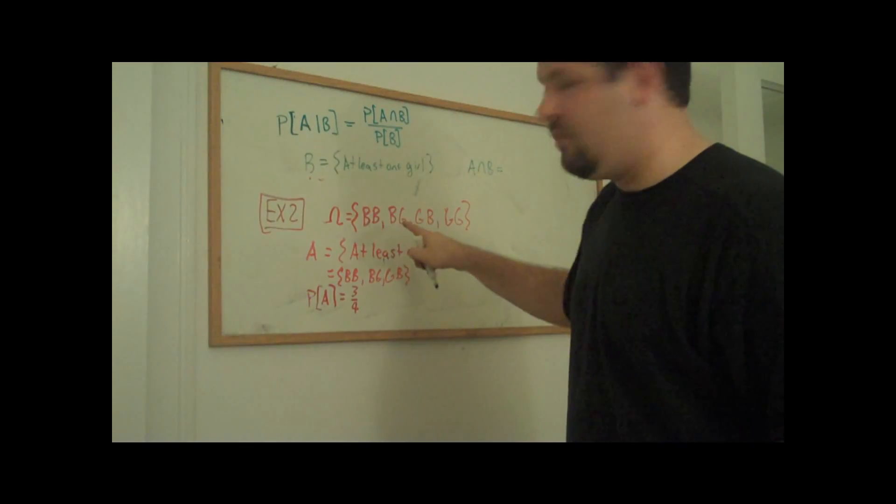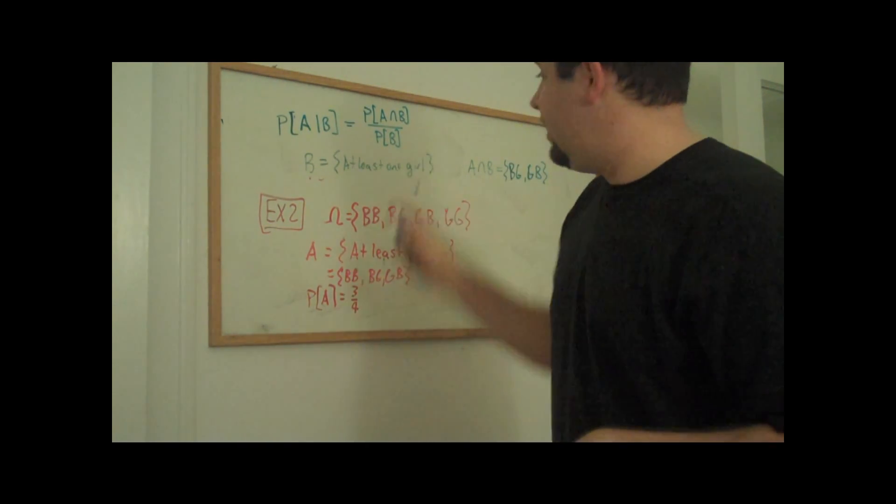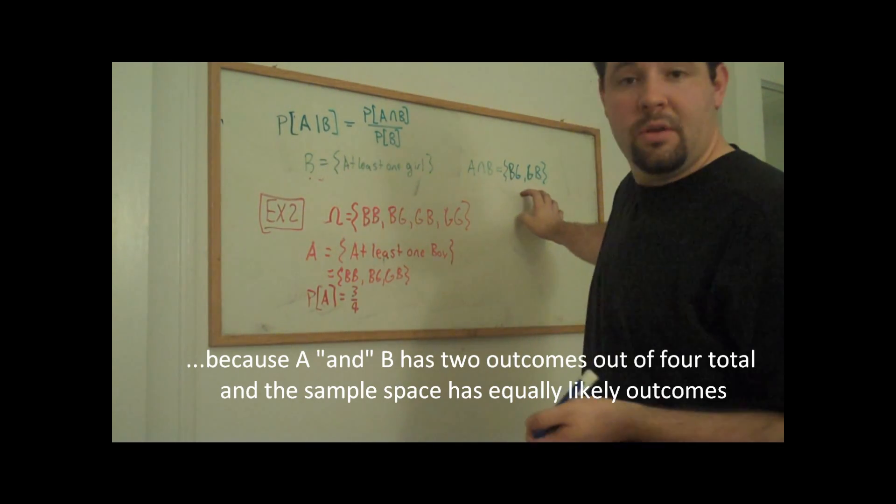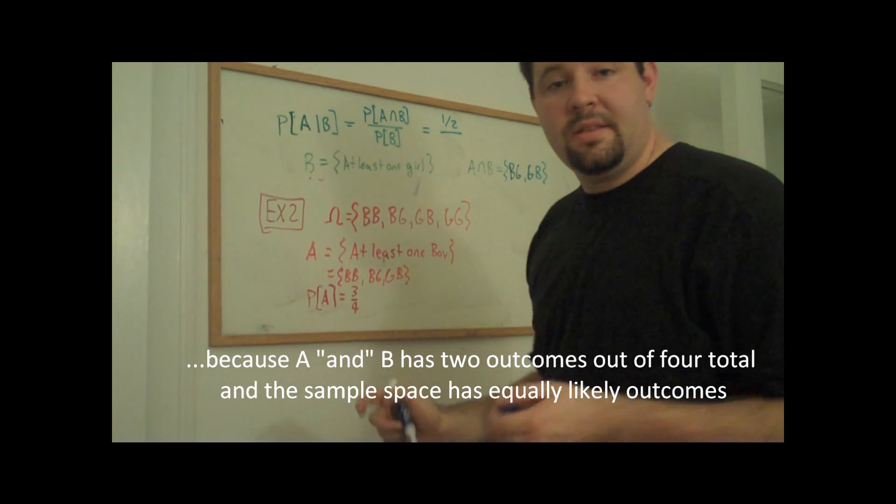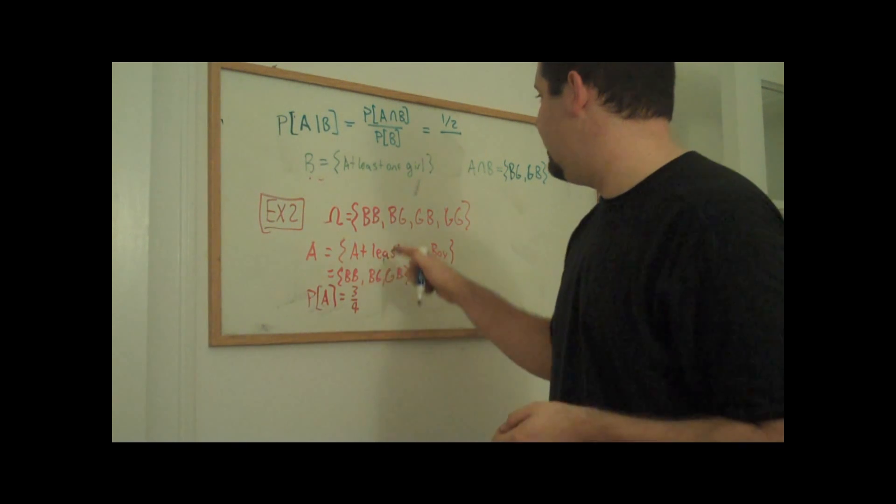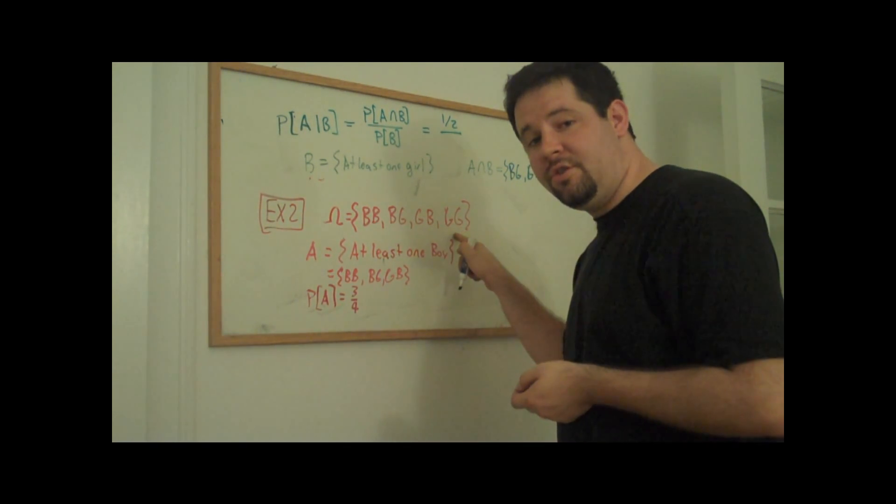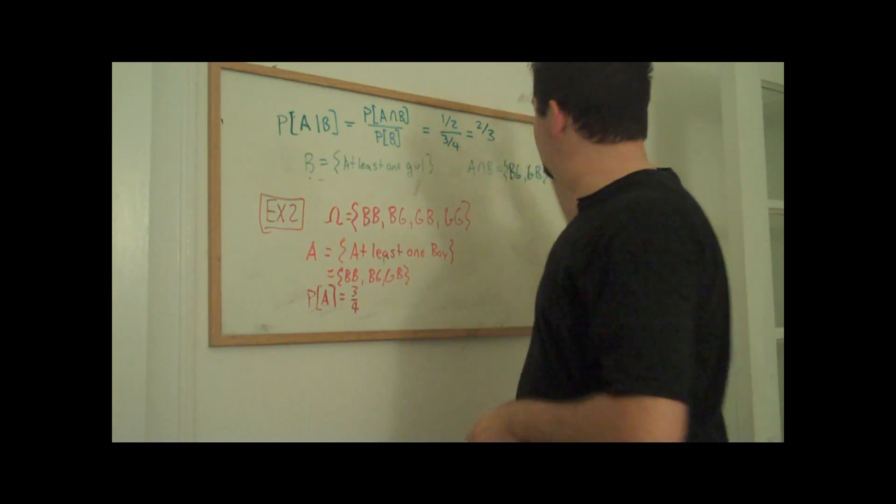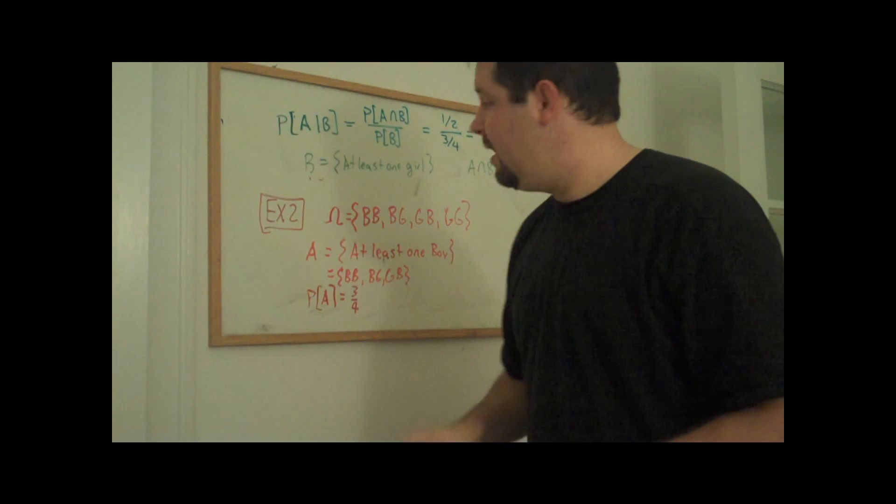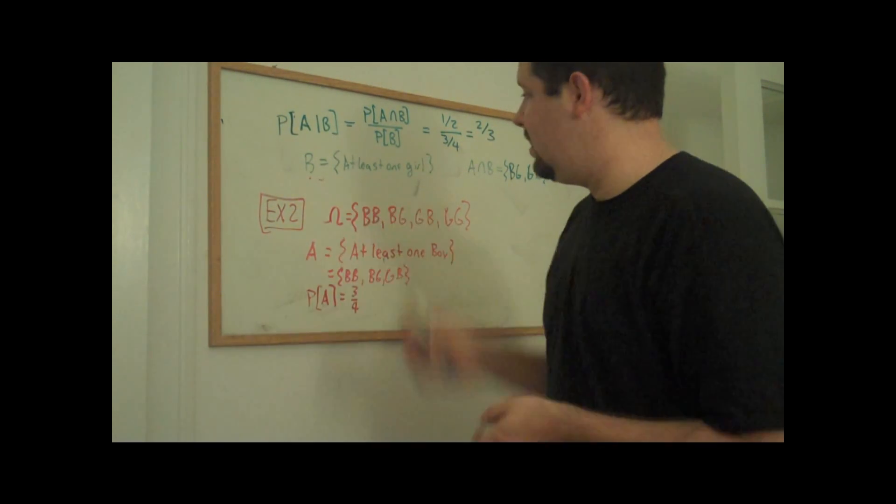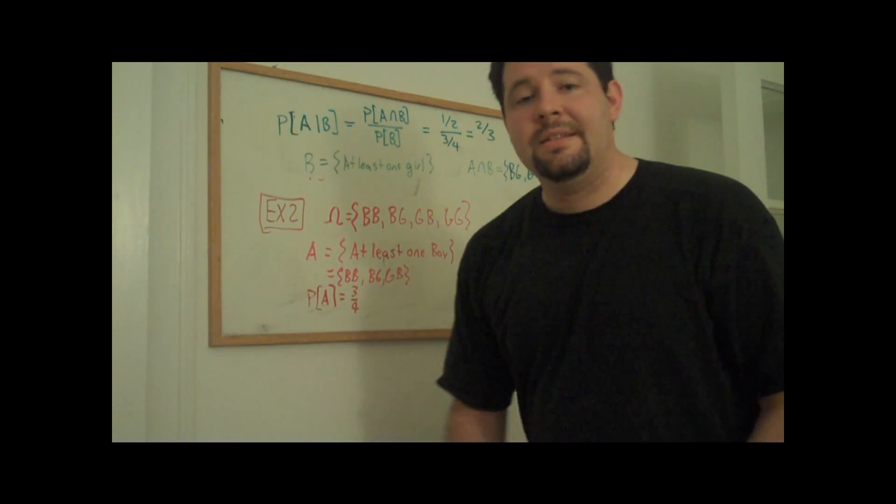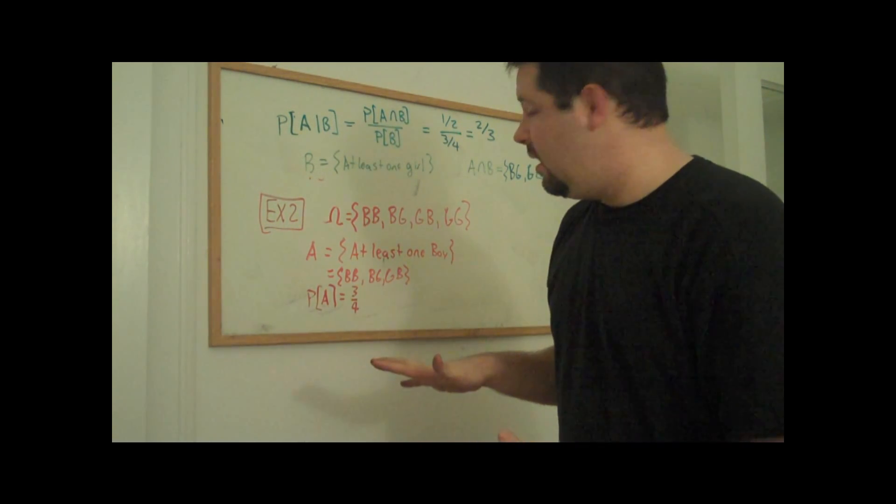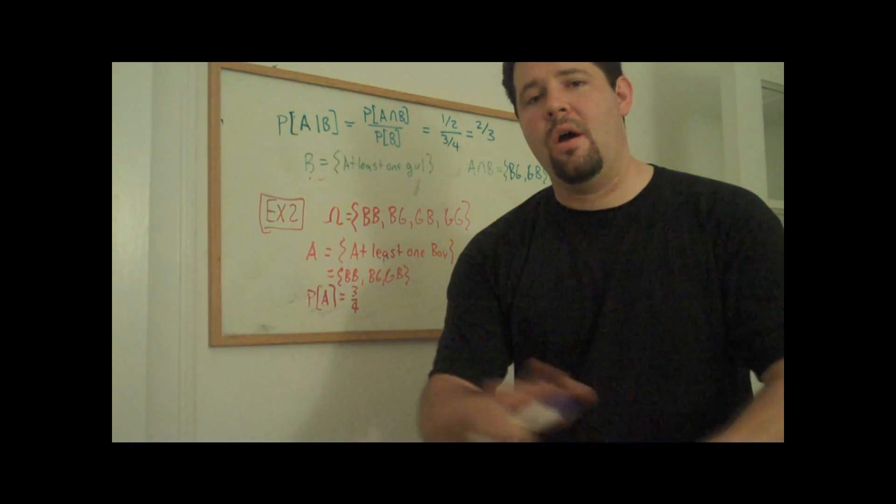Let's just keep event A the same and define B to be there is at least one girl. A intersect B equals BG and GB. We can go ahead and compute this probability. Now the probability that A intersect B, well that's just going to be one half. And the probability that B occurs, that is that there's at least one girl. Well let's count the elements and these are all equally likely. At least one girl has BG, GB and GG. So that's three-fourths. Invert and multiply and we'll get two-thirds. And so this conditional probability, the probability that there's at least one boy given that there's at least one girl is going to be two-thirds. And so now you have a sense for what probability is and what a conditional probability is. And in particular you have a really good sense for how probability works in general.